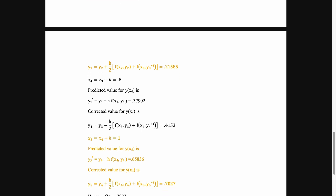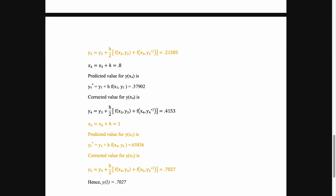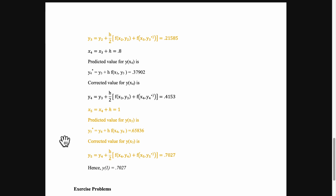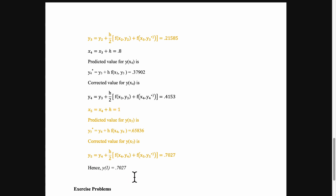Repeat this procedure for x₄ = 0.8 to get y₄* and y₄, and for x₅ = 1 to get y₅* and y₅. This y₅ is the value of y at x₅ = 1. So we get y(1) = 0.7027.